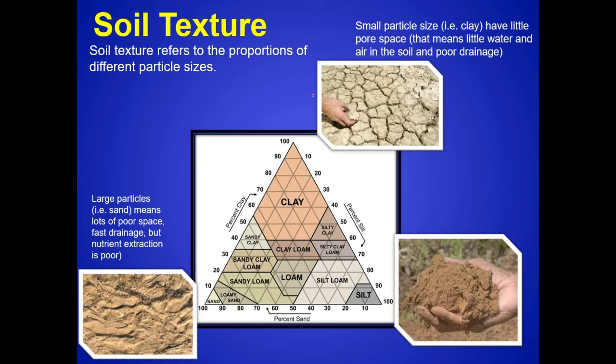Let's talk a little about soil texture. Soil texture is the distribution of different sizes of particles in your soil. We divide soil into three different textures — different sizes of particles. The smallest is called clay. Clay, as you may remember from the sediment lecture, is very, very fine-grained material — almost ashy. Clay has very little pore space, which means very little water can penetrate or permeate through it.